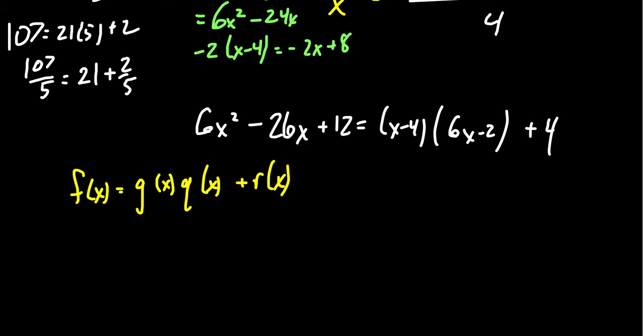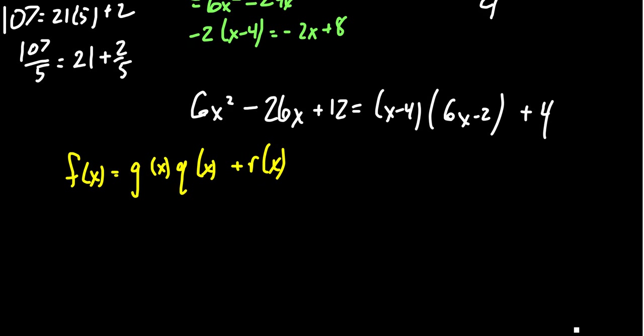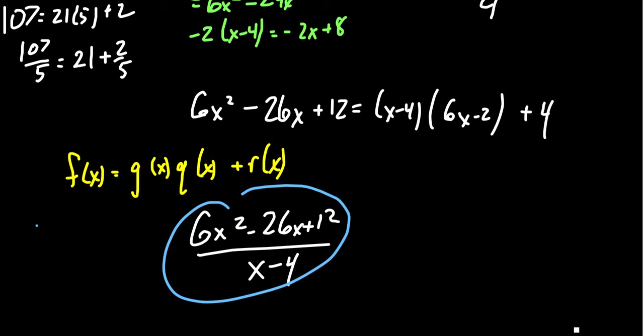We can also think of this as a mixed number. So in a mixed number, we start off with this improper fraction, 6x² - 26x + 12. This sits above x - 4. We can think of this as this improper fraction. What do I mean by improper fraction? Improper fractions like we saw above, 107 over 5, this would suggest that the numerator is either bigger than or equal to the denominator.